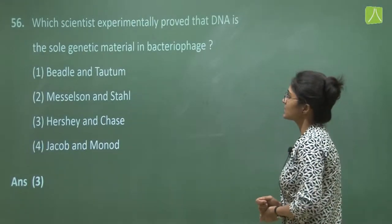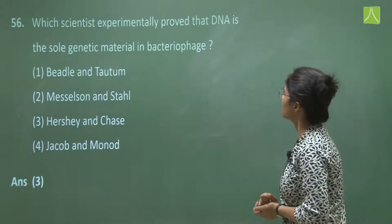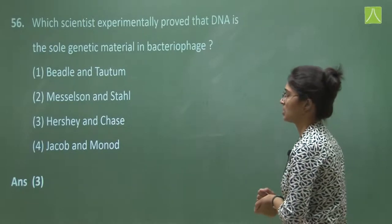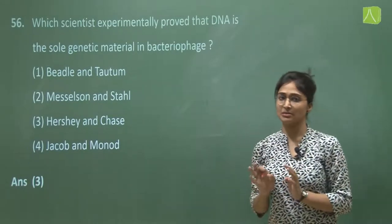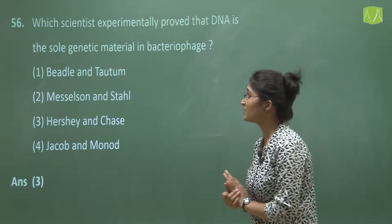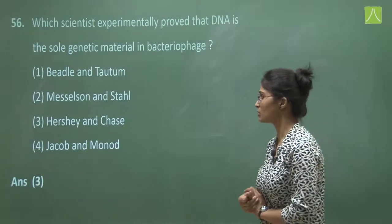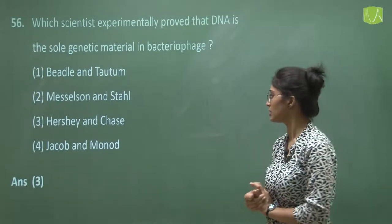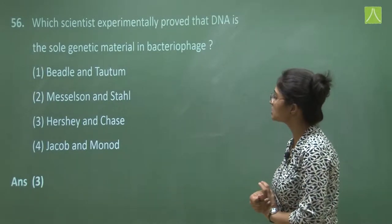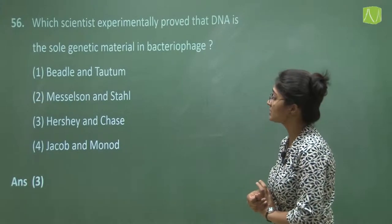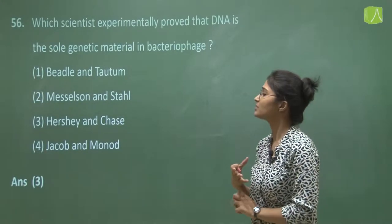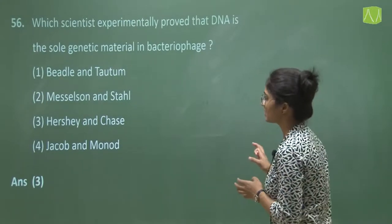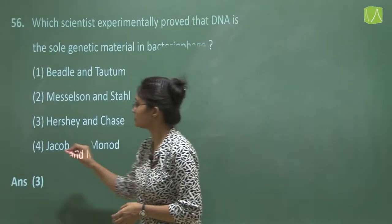Question 56 asks which scientist experimentally proved that DNA is the sole genetic material in bacteriophage. This is a simple NCERT-based question. Beadle and Tatum are wrong. Meselson and Stahl gave the conservative mode of replication. Hershey and Chase used bacteriophage and showed that its genetic material is DNA — this is correct. Jacob and Monod are not related to this. So the answer is option three.